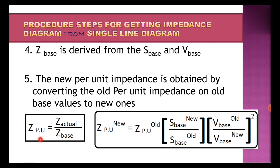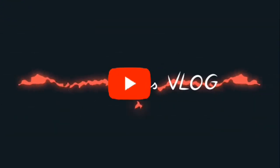The actual expression is: Z per unit equals Z actual divided by Z base. From this we obtain the new Z per unit by considering the old base values. The finalized expression for Z_PU(new) is: Z_PU(new) = Z_PU(old) × (S_base(new) / S_base(old)) × (V_base(old) / V_base(new))². By considering all these steps, we obtain the impedance diagram from the single line diagram.